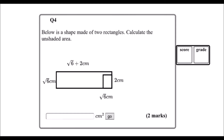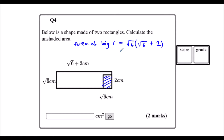Question 4. Below is a shape made of two rectangles. Calculate the unshaded area. The unshaded area is going to be the area of the big rectangle take away the area of the small rectangle. The big rectangle is length times width, so it's √6 times (√6 + 2). √6 times √6 is 6, and √6 times 2 is 2√6. So the area of the big rectangle is 6 + 2√6.